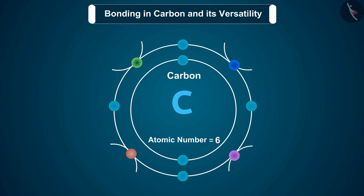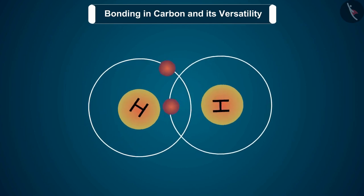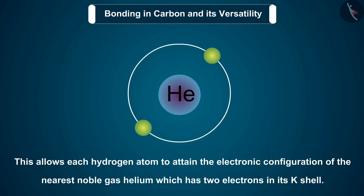The simplest molecule formed in this manner is that of hydrogen. As we have previously studied, the atomic number of hydrogen is 1. Hence, hydrogen has one electron in its K-shell and it requires one more electron to fill the K-shell. So two hydrogen atoms share their electrons to form a molecule of hydrogen, H2. This allows each hydrogen atom to attain the electronic configuration of the nearest noble gas, helium, which has two electrons in its K-shell.